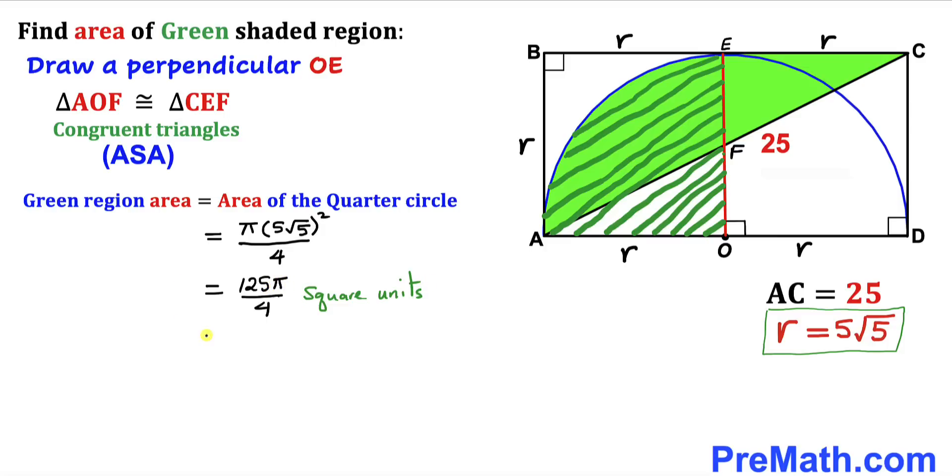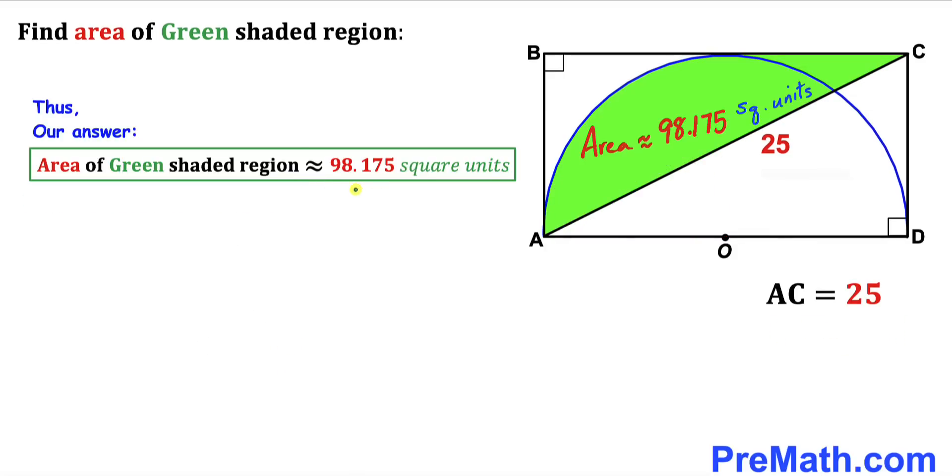This green shaded area is going to be approximately equal to 98.175 square units. So thus the area of this green shaded region turns out to be approximately equal to 98.175 square units.